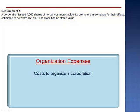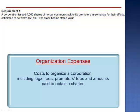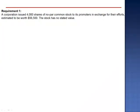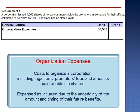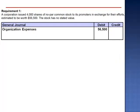Organization expenses are the cost to actually organize a corporation. They include legal fees, promoter's fees, and amounts paid to obtain a charter. The corporation records as an expense the $56,500. The name of the expense is organization expense. Organization costs are expensed as incurred because it's difficult to determine the amount and the timing of their future benefits. And since we're paying this cost by issuing stock, we credit the common stock no-par value account for $56,500.